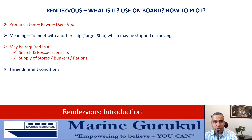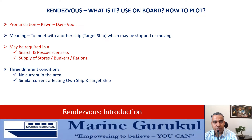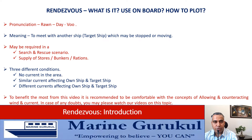The rendezvous questions can be broadly divided into three scenarios. The simplest one is that there is no current in the area. The second scenario could be the current affecting both the own ship and the target ship. The third scenario could be different currents affecting the own ship and the target ship. To benefit the most from this video, it is recommended to be comfortable with the concepts of allowing and counteracting wind and current. In case of any doubts, you may please watch our videos on this topic.